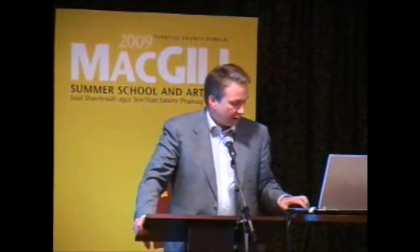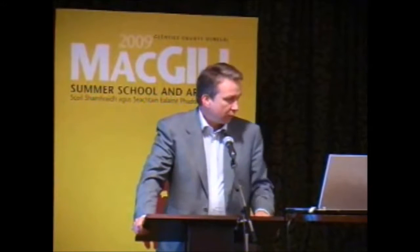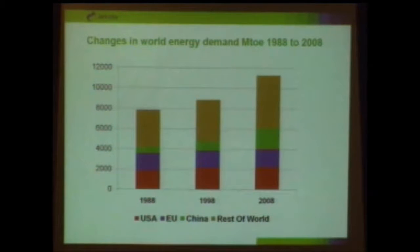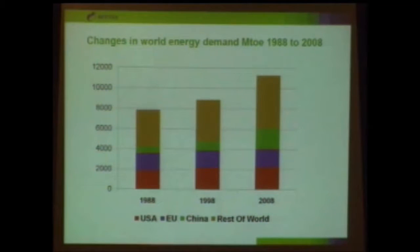I'm going to take a slightly different approach and start with an overview of what's happened historically in the world over the last 20 years. This graph is trying to communicate the gross demand for energy all across the world, measured in millions of tons of oil equivalent, which is a way of bringing all energy sources to one common fuel denomination. I've put just a couple of areas here.